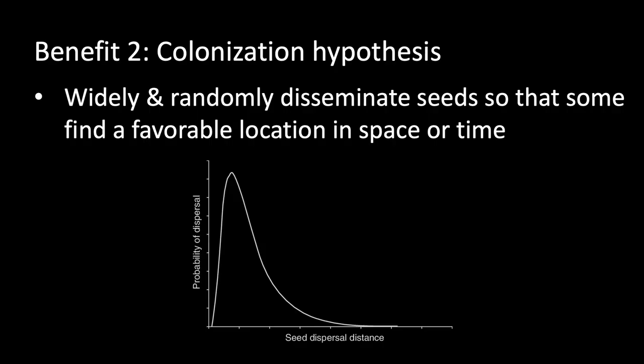So we started out talking about the escape hypothesis, in which negative density-dependent effects are associated with the parent plant. Most seeds do not get dispersed very far away, so there are more seeds by the parent plant, and that aggregation of seeds plus the presence of the parent plant itself can increase seed predation and seed pathogens. Therefore, one reason to disperse may be to escape those negative density-dependent effects — that's the escape hypothesis.